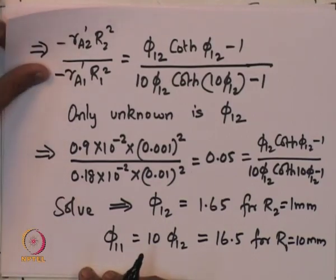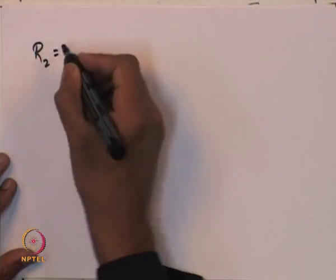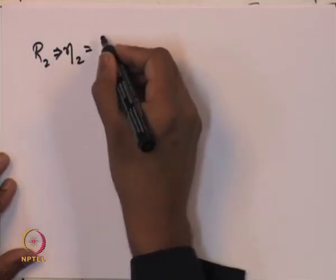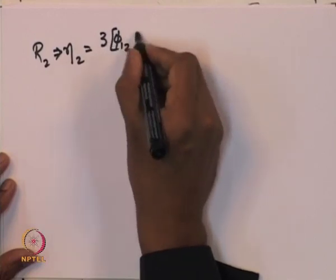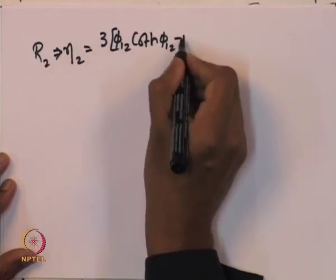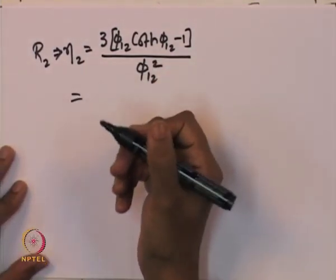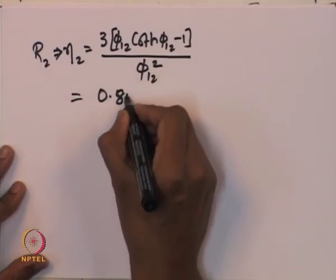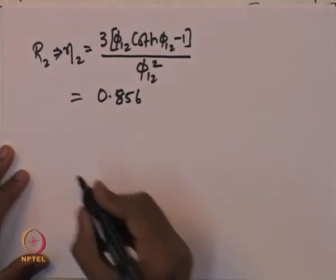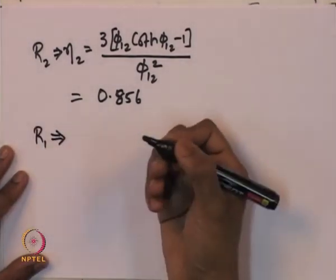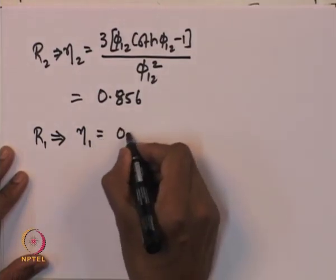Now that we know the Thiele modulus, we can estimate the effectiveness factor since these are related. For Experiment 2 (R_2 = 1 mm): eta_2 equals 3(phi_12 coth(phi_12) minus 1) divided by phi_12 squared, which gives eta_2 ≈ 0.856. Similarly, for Experiment 1 (R_1 = 10 mm), the effectiveness factor eta_1 ≈ 0.182.